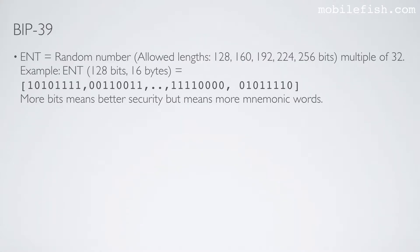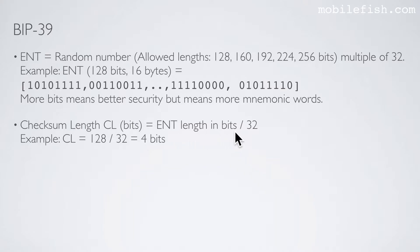Now I will explain how the mnemonic words are implemented. First you create a random number. This random number must have a length of 128, 160, 192, 224, or 256 bits — these lengths are always a multiple of 32. For example, I create a random number which is 128 bits long. Note: more bits means better security but means more mnemonic words. The variable ENT means entropy, and entropy means disorder. Next you take the random number length in bits and divide it by 32. If the random number is 128 bits long, you divide by 32 and the checksum length is 4 bits.